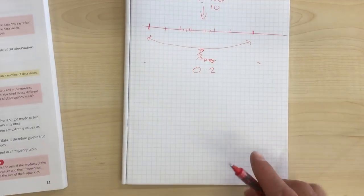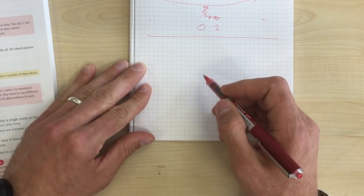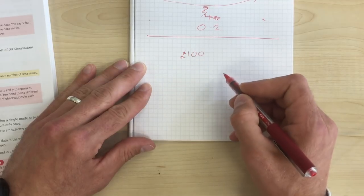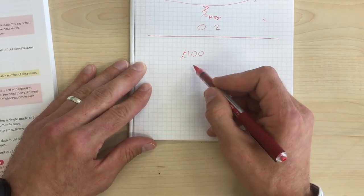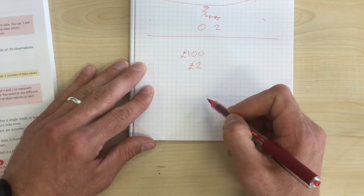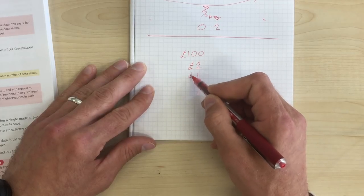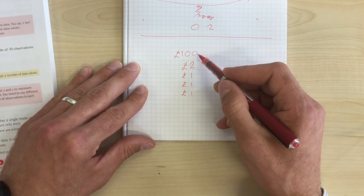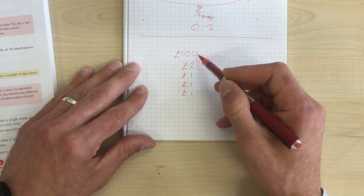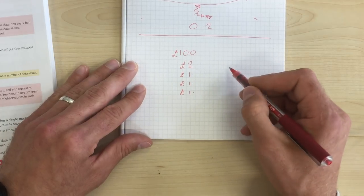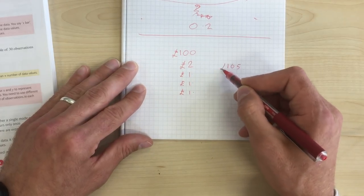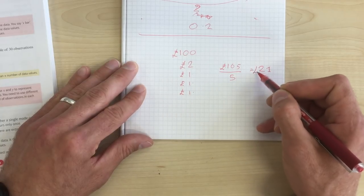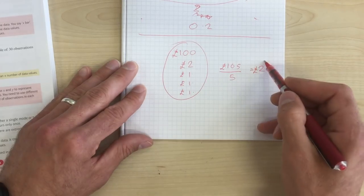Now, you may have seen examples like this one, where let's say we have somebody who owns a factory who, or a business of some sort, who is getting £100 a day. And they are paying somebody £2 a day. And then they've got three other people that are getting paid £1 a day. Now, if we work this out, what's the mean of those five numbers? Well, it's £100, £102, £103, £104, £105. So it's £105. So the mean is £105 divided by 5, which is £21.